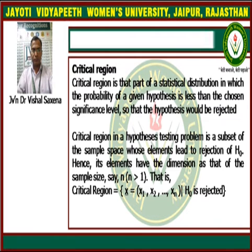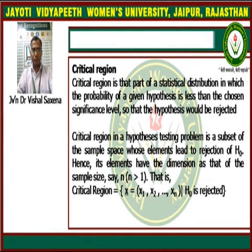Next we come to the topic of the critical region. The critical region is that part of a statistical distribution in which the probability of a given hypothesis is less than the chosen significance level, such that the hypothesis would be rejected. The critical region is the region in which, if the sample value lies, then the null hypothesis would be rejected.